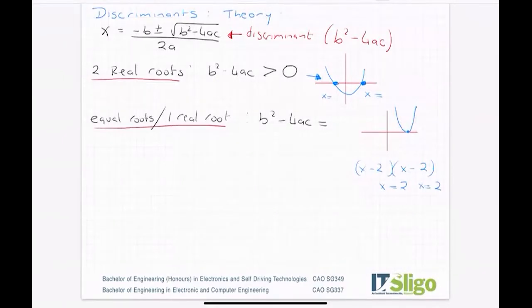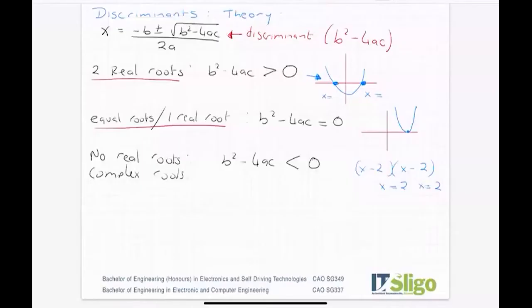And then the third condition is when b squared minus 4ac is less than 0. And these are called no real roots, or they could be called complex roots. So when b squared minus 4ac is less than 0, we get no real roots or what's called complex roots. So there's a chapter in your leaving cert course called complex numbers, and this feeds into this section.